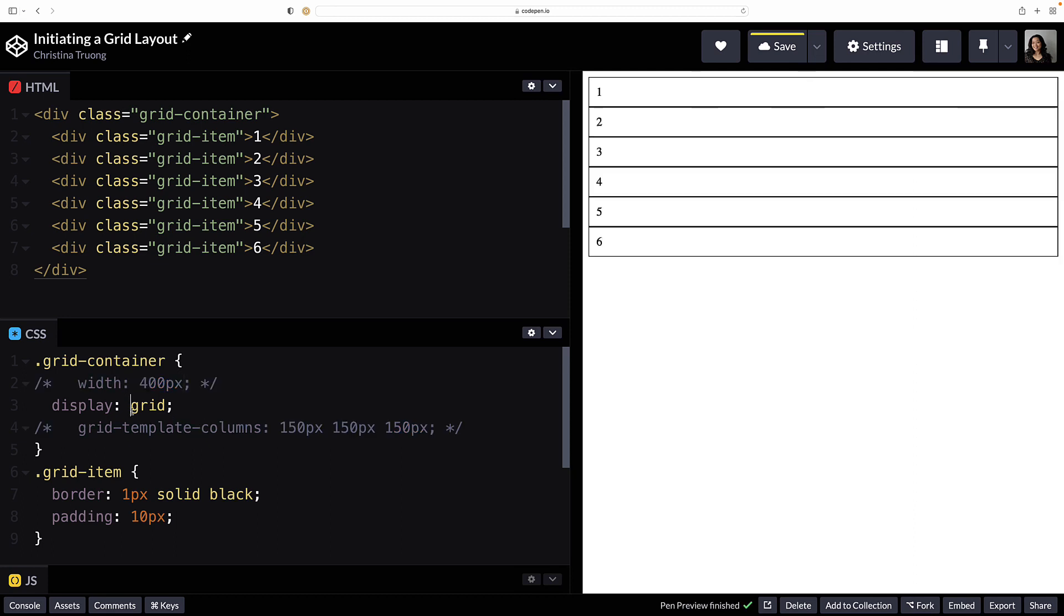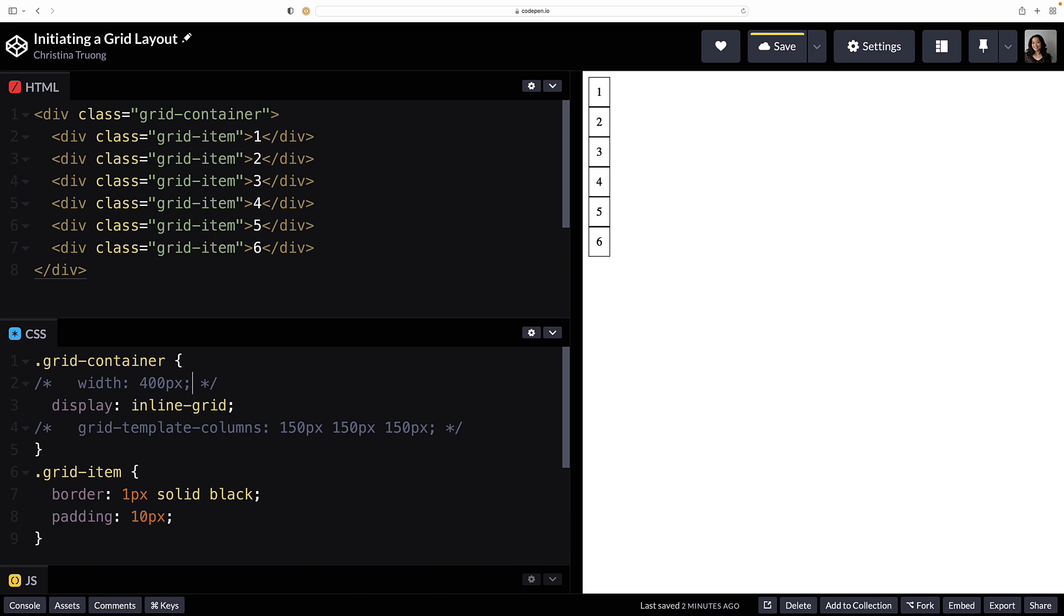The Inline Grid value will display the grid items with the same width of its content, but only if no width is defined in the grid container or the grid columns.